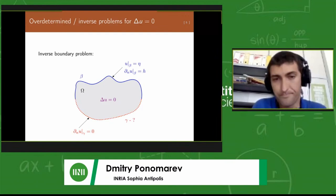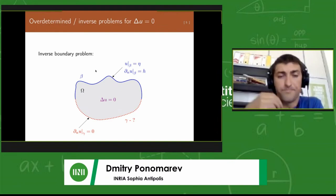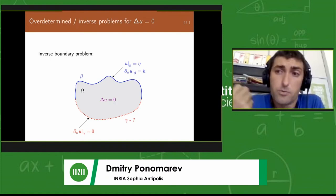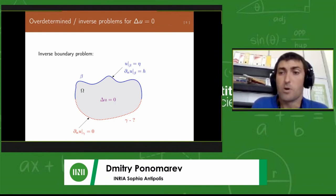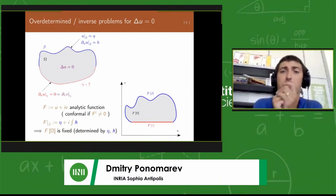A related problem is an inverse boundary problem. In this case, again you have a part of the boundary where you have both Dirichlet and Neumann data, and the other part of the boundary is simply unknown. But what you know is that the solution must satisfy certain conditions there, in particular here a Neumann zero condition. This part of the boundary gamma should be determined from that condition.